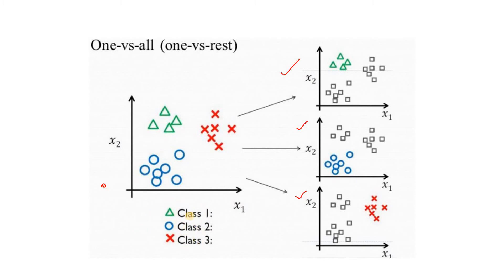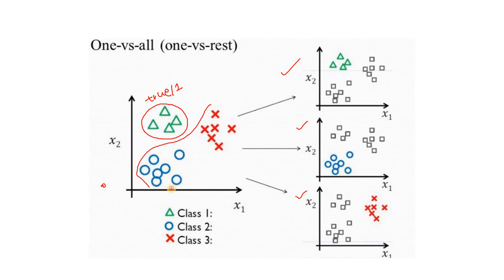The number of models equals the total number of unique classes in the dataset. Here there are three classes, so three models are created. For Class 1's model, all training data points belonging to Class 1 are labeled as true (logical 1), and all remaining data points — those belonging to Class 2 and Class 3 — are labeled as false (logical 0). This makes it binary classification: plus one and minus one.